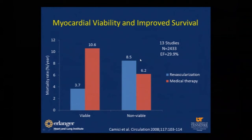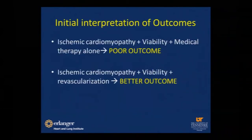Similar findings were reported by another meta-analysis in 2008, with 13 studies and about 2,500 patients with EF less than 30%. In viable myocardium, revascularization had lower mortality compared to medical therapy; in non-viable myocardium, no difference. The problem with this meta-analysis is the inherent limitation of no quality control. However, this data and many other meta-analyses show similar findings of benefit of revascularization in the presence of viable myocardium.